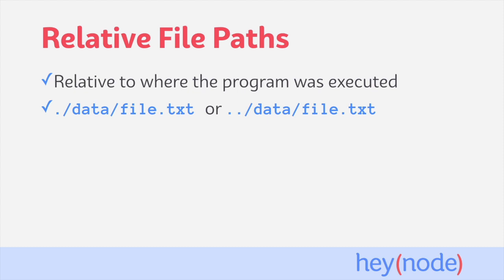A relative path is a way to define a path to a file relative to the current directory. A relative path will begin with either a single dot, indicating relative to the current directory, or two dots, meaning relative to the parent directory.